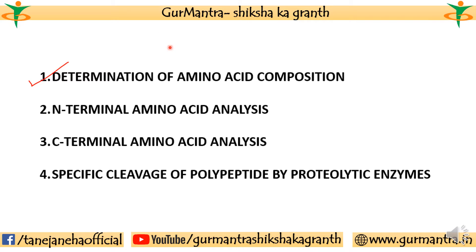As mentioned, there are 4 important things to consider in protein sequencing. Determination of amino acid composition we have already covered. For protein sequencing, we can use different assays and methods. The first is N-terminal amino acid analysis, the second is C-terminal amino acid analysis. N-terminal means which amino acid is present at the amino group end, because the sequence starts from there.